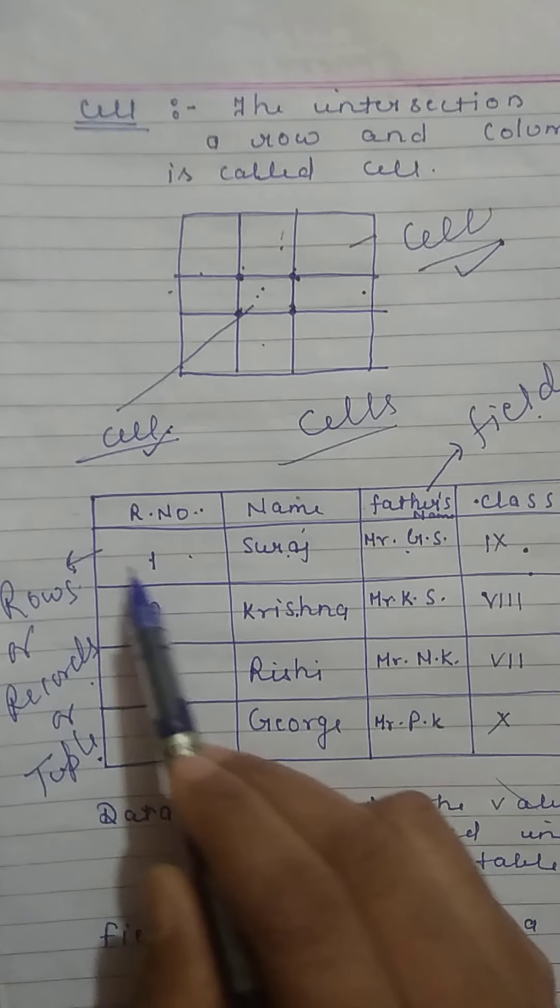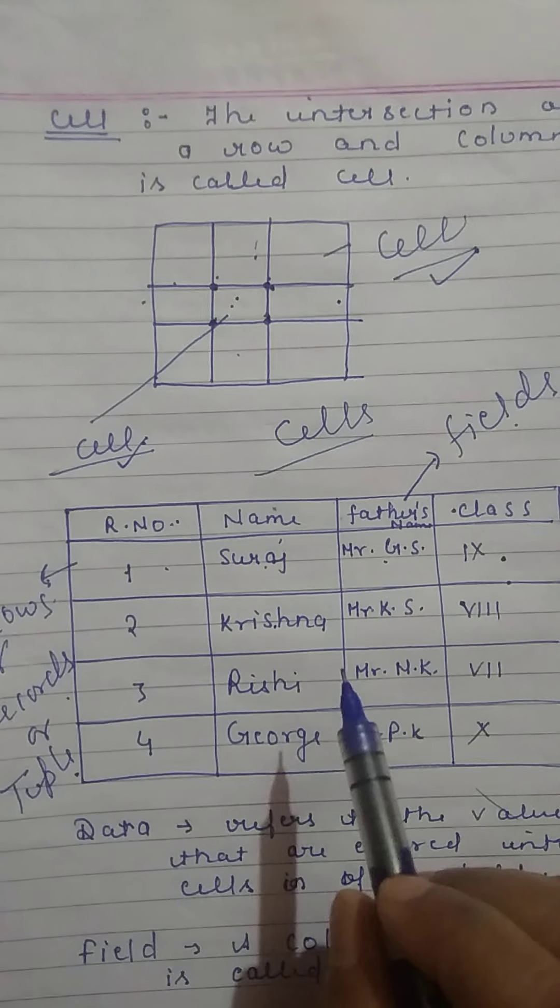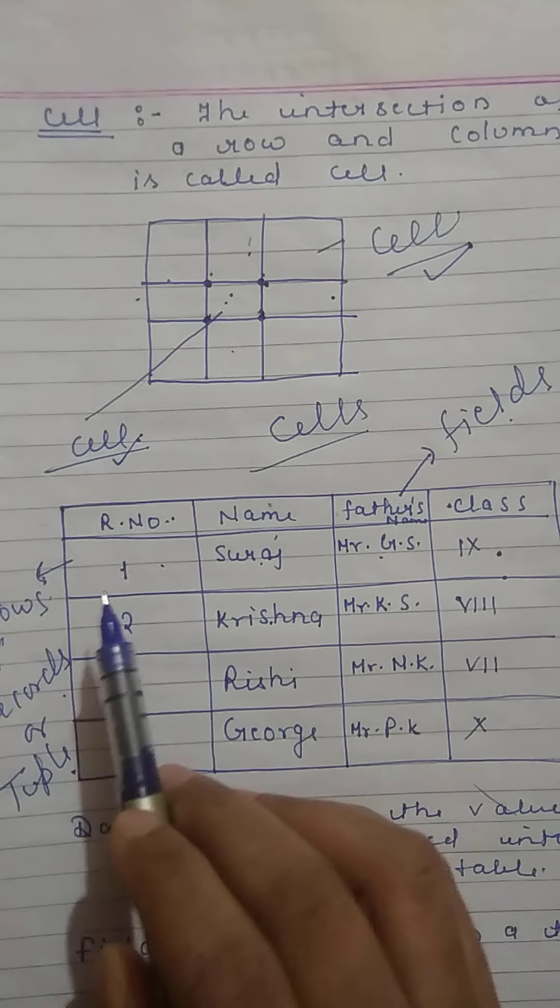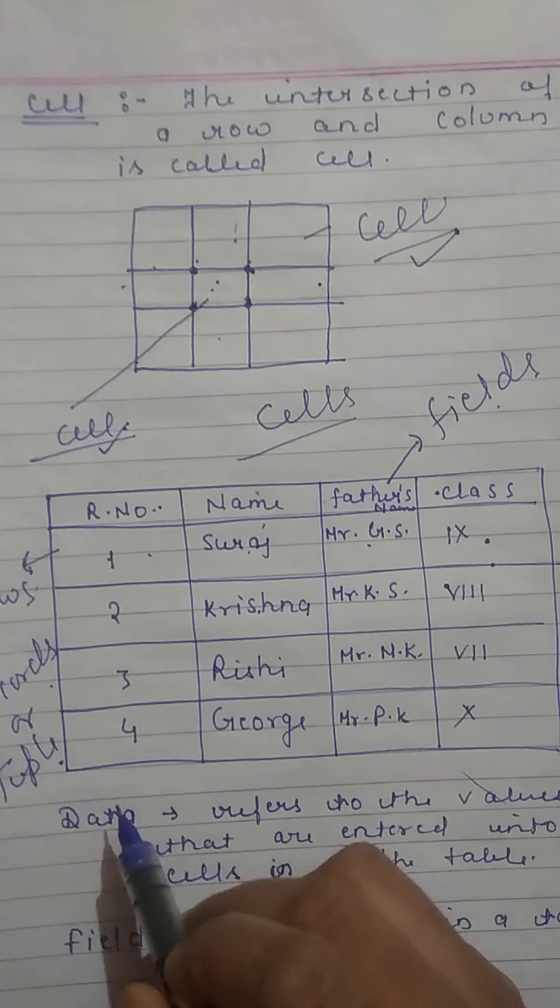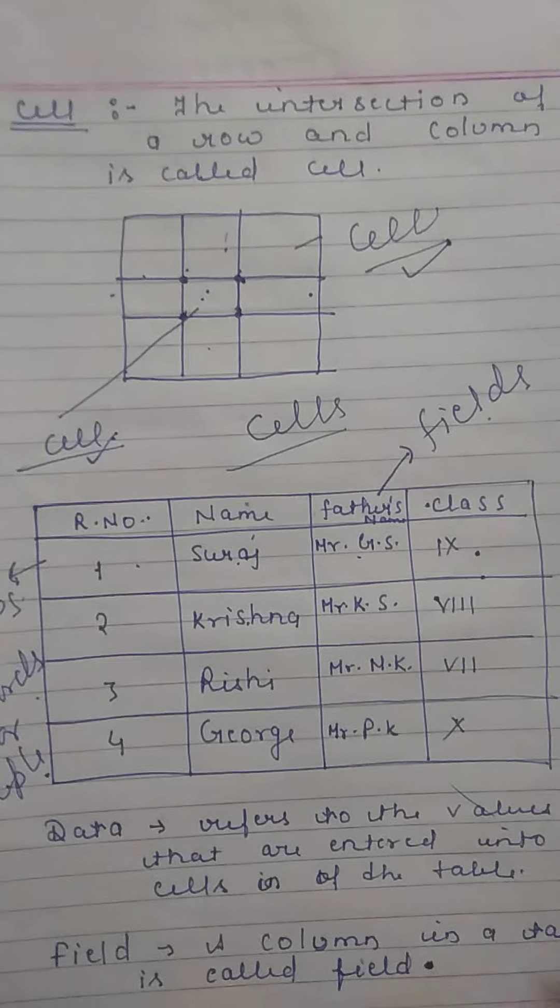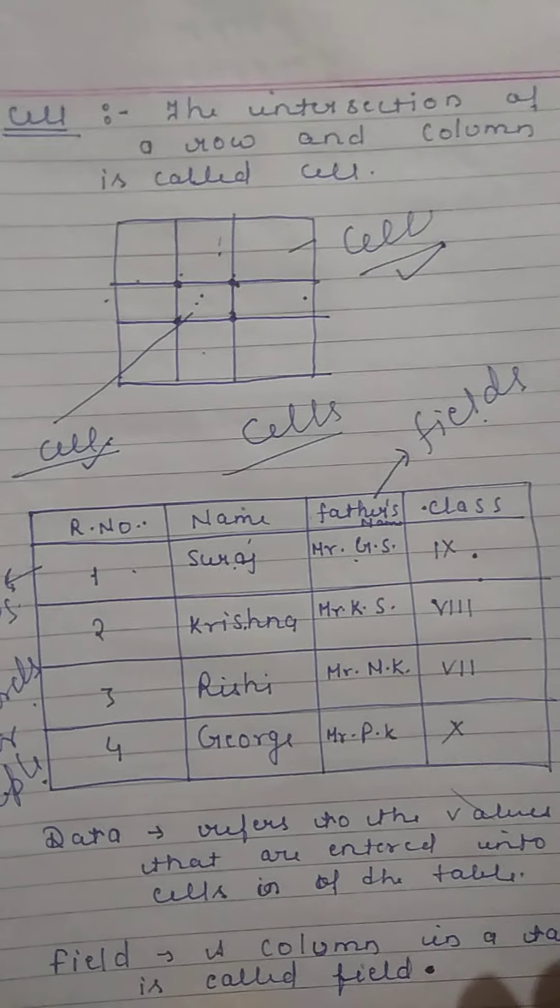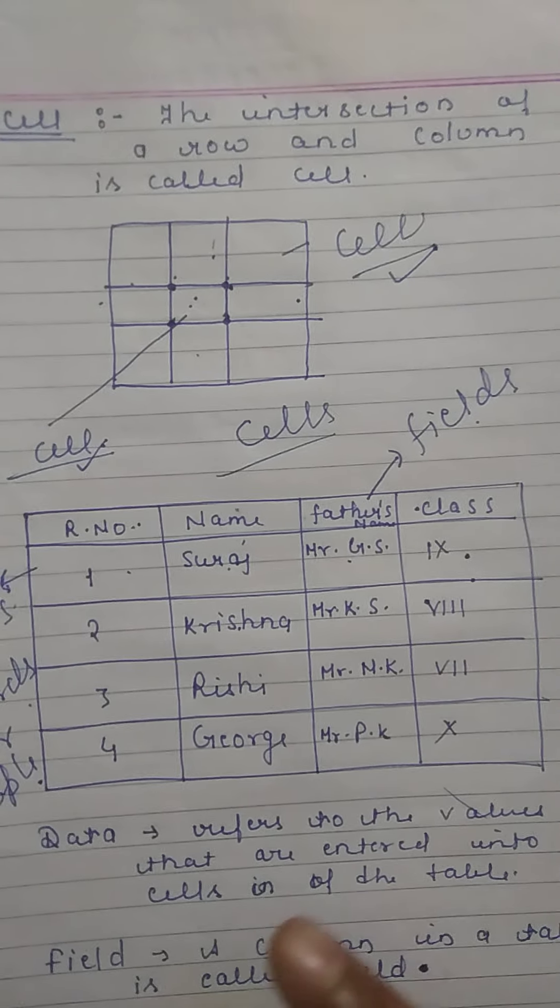And row represents a single information. Or in other words, we can say, single row is an information about a particular entity. Entity can be any person, place, product, anything. If we want to maintain information related to a particular entity, then we can use row.